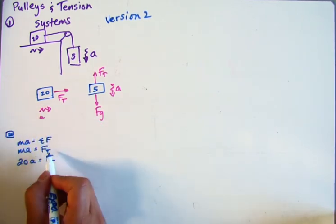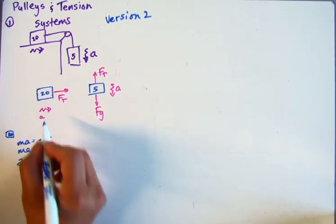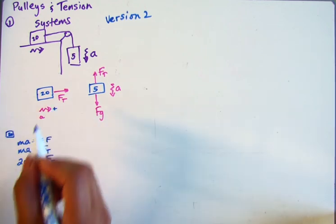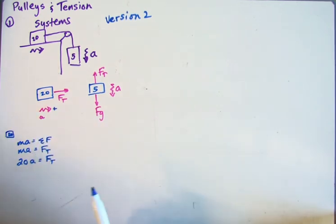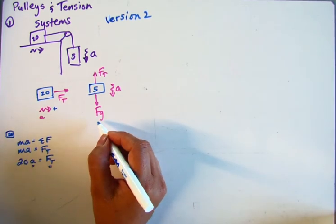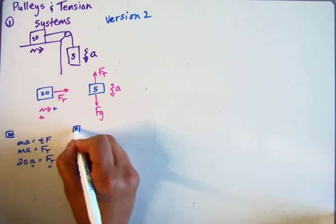And I kind of did it without really specifying, but I'm taking that direction that's accelerating to be positive. So we're left with this equation and we're kind of stuck because we don't know A and we don't know Ft. This might seem like a dead end, but it's not because we also have this information, the 5 kilogram mass.